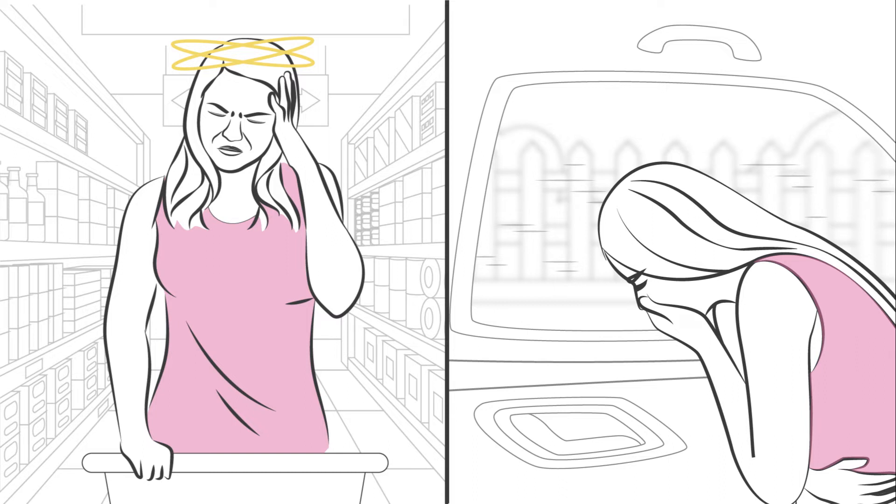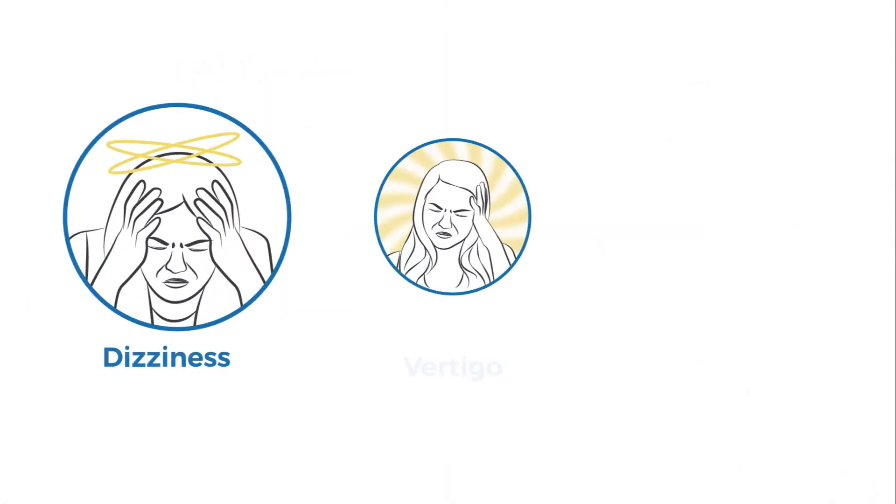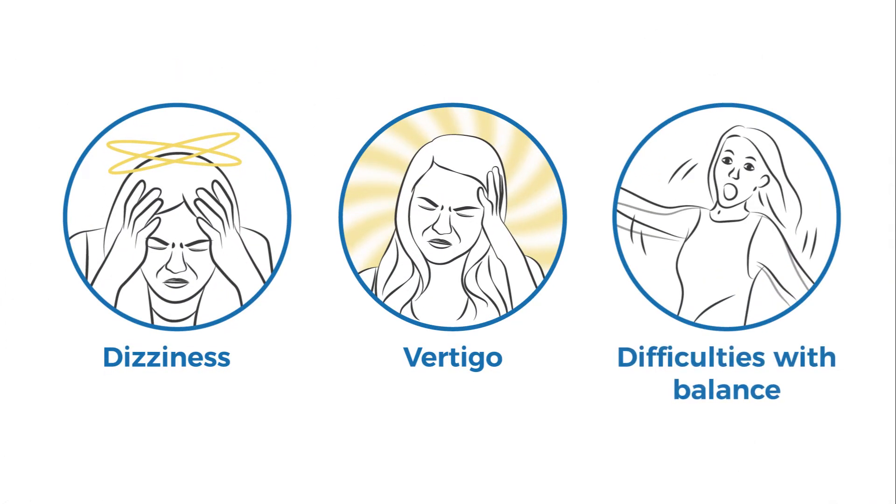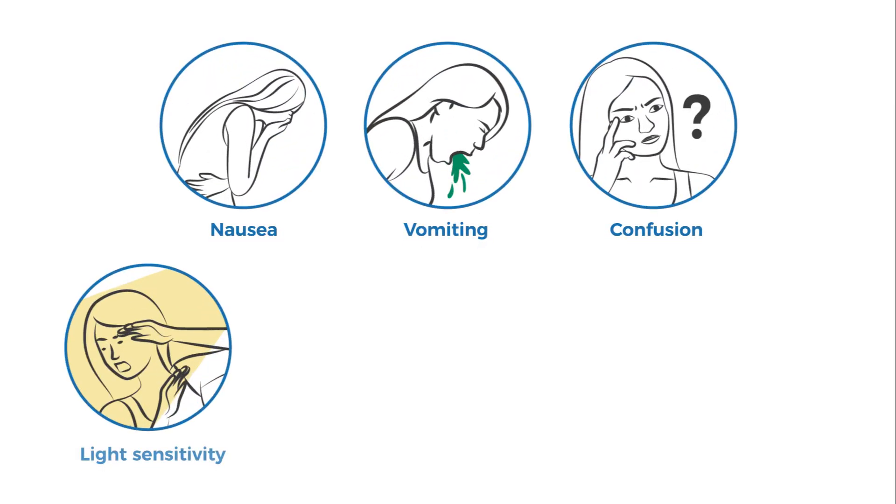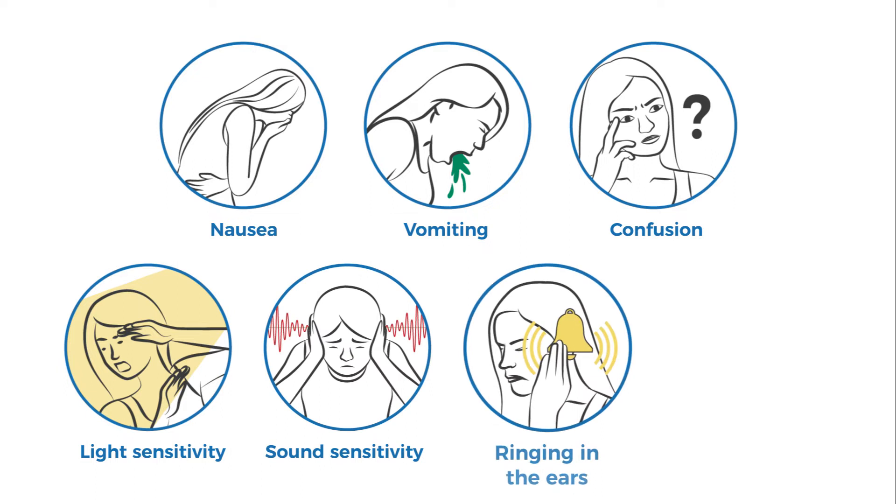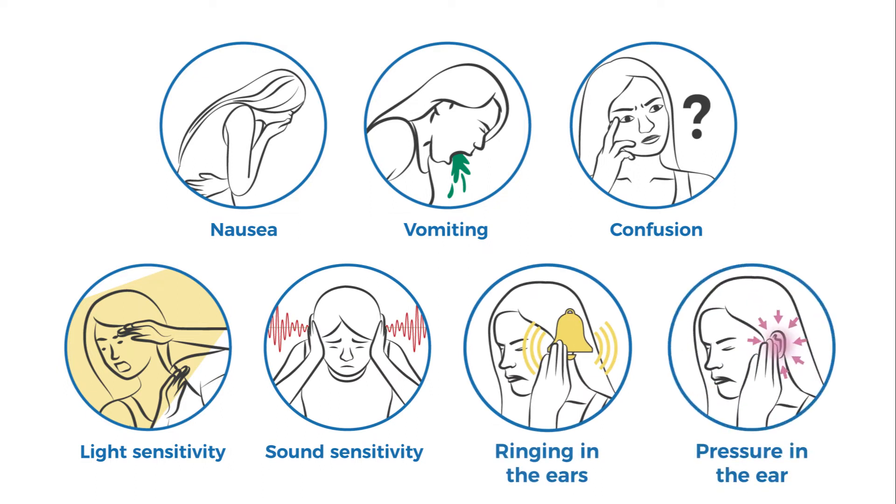The main symptoms of vestibular migraine include dizziness, vertigo, and difficulties with balance. Symptoms can also include nausea or vomiting, confusion, sensitivity to light or sound, ringing in the ears, and feeling of pressure in your ear.